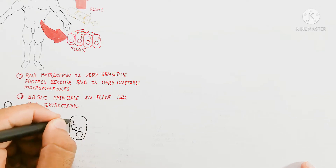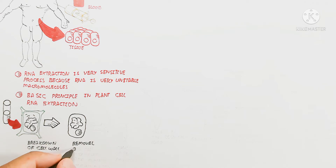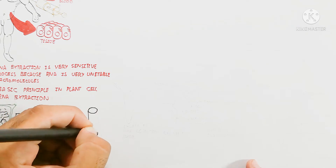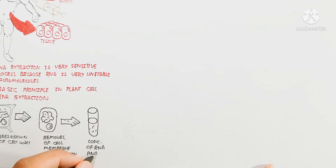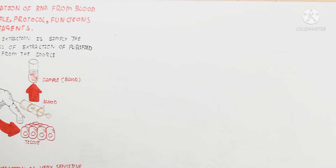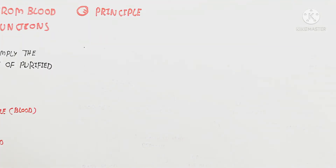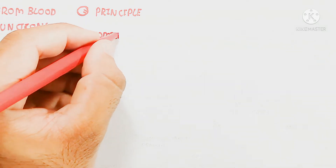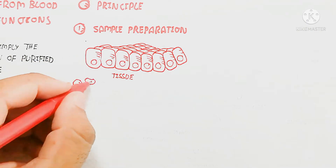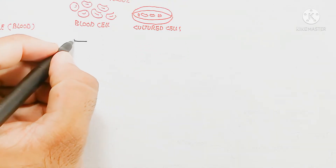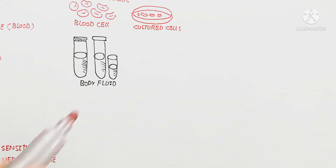The sample preparation involves tissue, blood cells, or cultured cells. Cultured cells are produced in vitro — also called ex vivo — through tissue culturing. Body fluid can also contain RNA. Importantly, RNases must be removed or inactivated because RNases will degrade RNA — that is a critical step to remember.